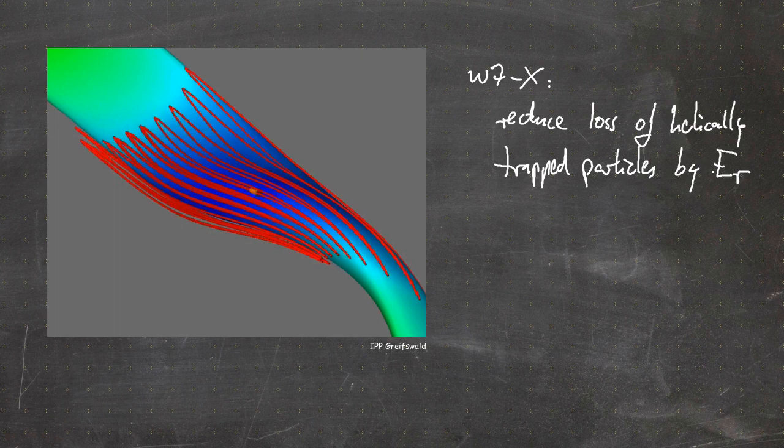That's it for this video on the influence of a radial electric field. We will talk about how this field is created in one of the next videos. You should have learned that: the electric field can lead to E×B drifts; when the poloidal drift velocity equals the poloidal thermal motion component, we speak of toroidal resonance and particles can be lost; but in a stellarator the radial electric field can also be beneficial, helping to reduce losses of helically trapped particles by turning their motion poloidally so they are no longer lost.